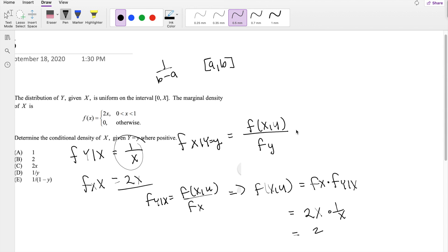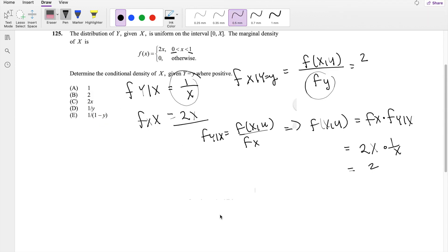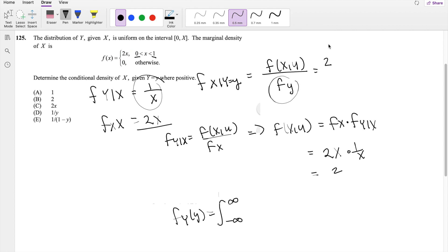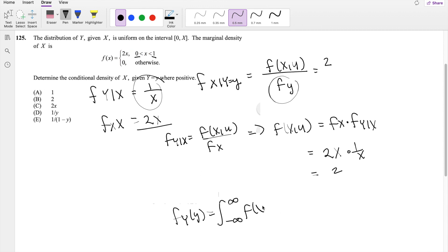Okay, so we know that this is equal to 2, so we just have to find out the marginal distribution of Y. So by definition, this is equal to the integral from negative infinity to infinity of the joint distribution function, integrating in terms of x.